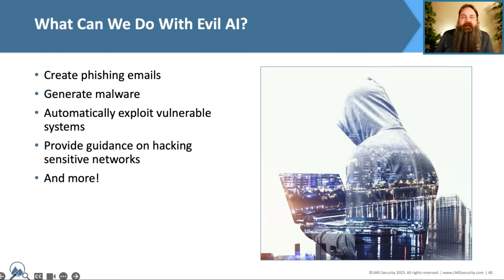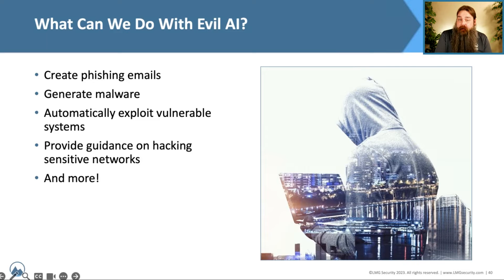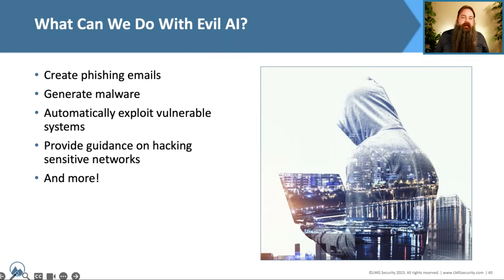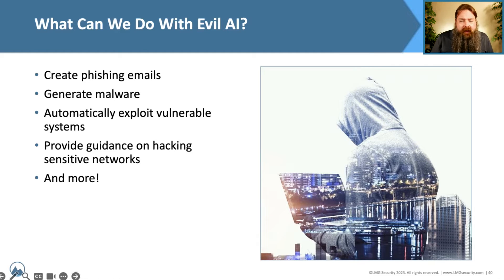So with access to an 'evil AI,' what can we accomplish? Quite a few things: we can generate phishing emails with high accuracy, generate malware without needing to write code ourselves, automatically exploit vulnerable systems, get guidance on how to hack networks, and much more. This is essentially unlimited access to an AI — and the answers we got back were convincing and telling.